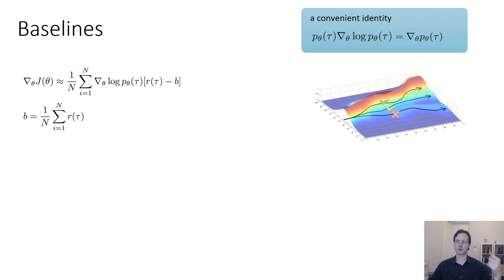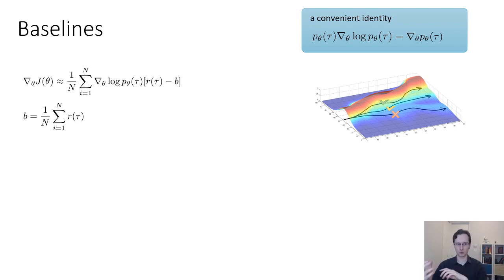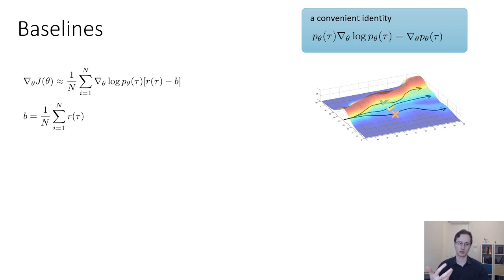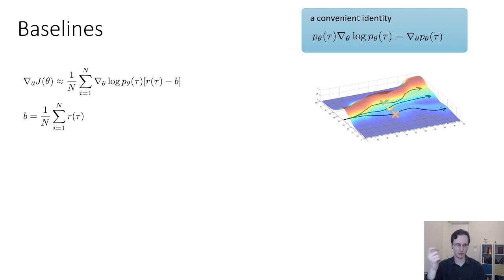But this might not necessarily be true. What if all your rewards are positive? Then the green checkmark's probability will be increased, the yellow checkmark will be increased a little bit, and the red X will also be increased, but only a tiny bit. Intuitively, it seems like we want to center our rewards so that things better than average get increased and things worse than average get decreased. For example, we might subtract a quantity from our reward — specifically the average reward — so that instead of multiplying grad log P by R of tau, we multiply by R of tau minus B, where B is the average reward. This would make policy gradients increase the probability of trajectories better than average and decrease the probability of those worse than average, regardless of what the reward function actually is.